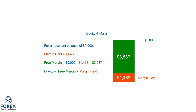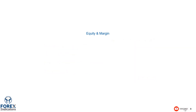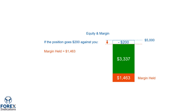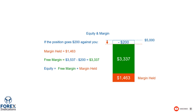Now what would happen if the position went against you once you were in the trade? Let's say $200 as an example. The margin held would still remain the same, and it is important to note that the margin held will not change, because you still have the same contract size open. However, the free margin will change to reflect the negative $200. If you take the initial free margin and subtract the $200 that you are currently down, the total free margin will change to $3,337. This would mean that if the position was closed, you could calculate the equity as free margin plus margin held, which would leave a remaining balance of $4,800.